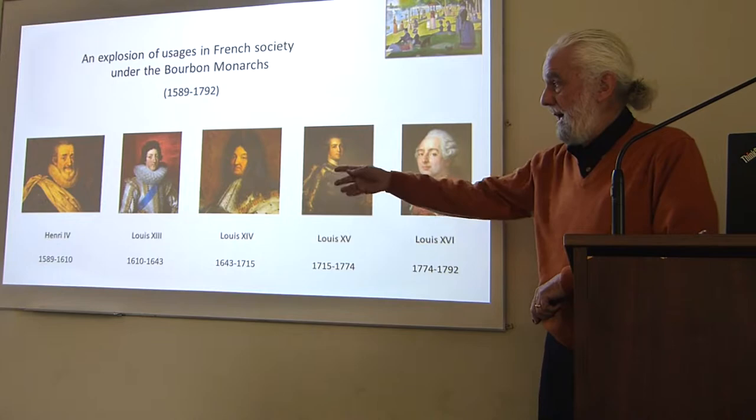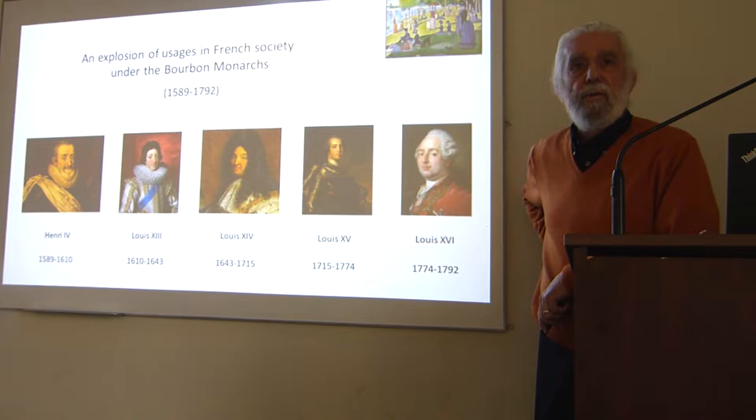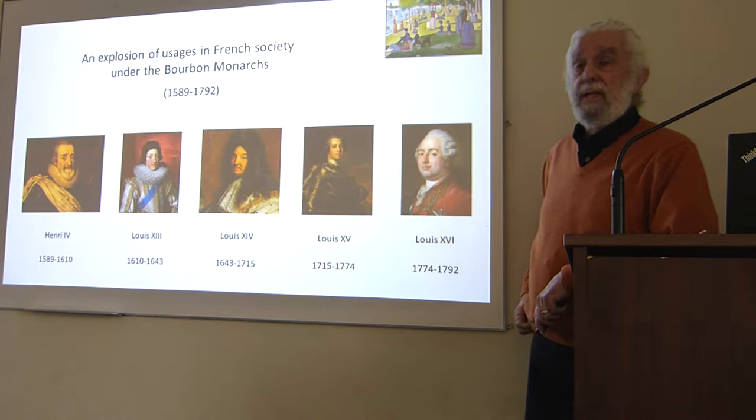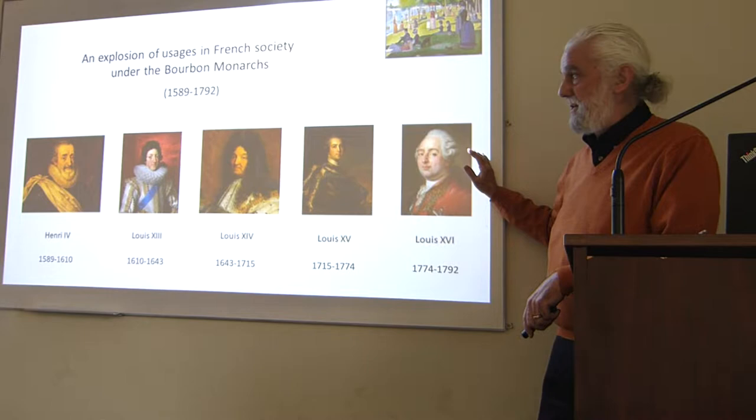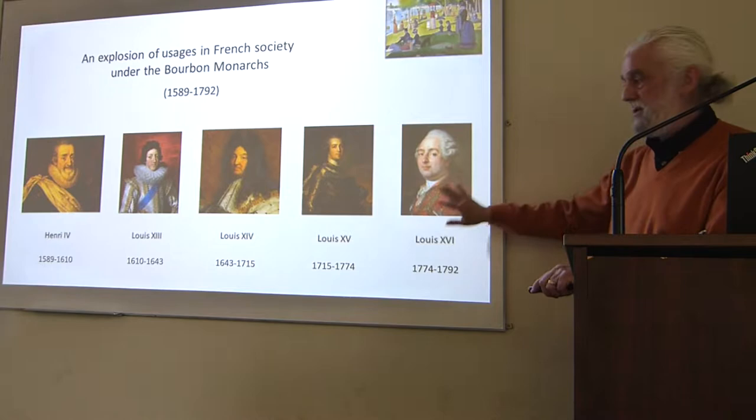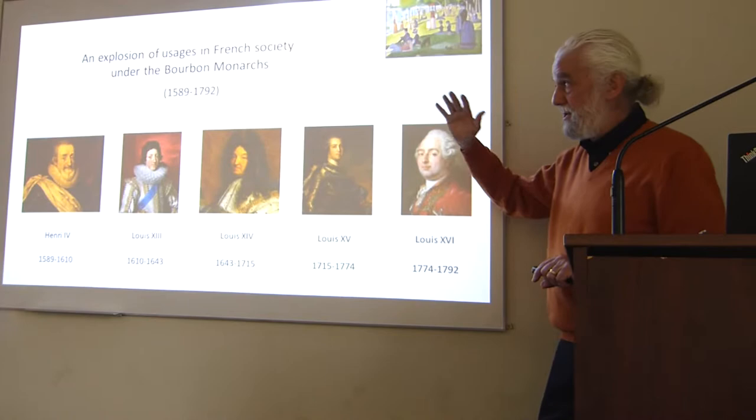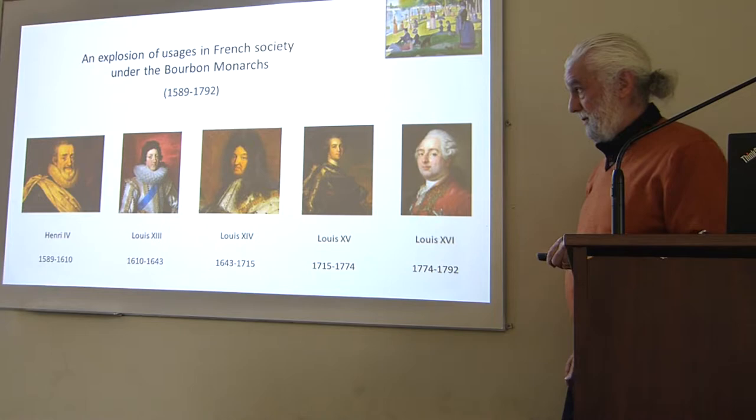In 1589, Henry IV gives up Protestantism, says 'Paris is worth a mass,' becomes king of France, and founds the Bourbon dynasty. For 200 years, Bourbon monarchs rule France: Henry IV, Louis XIII, XIV, XV, and XVI. In this 200-year period we really have this efflorescence of château and château culture.